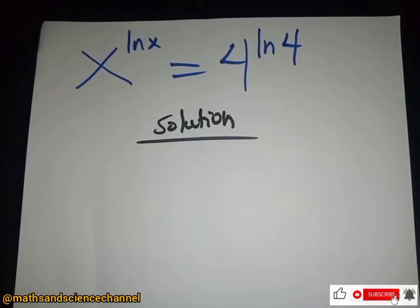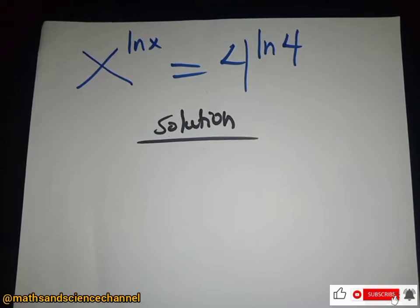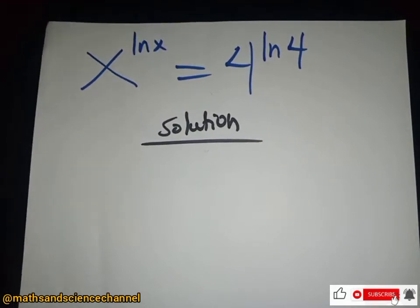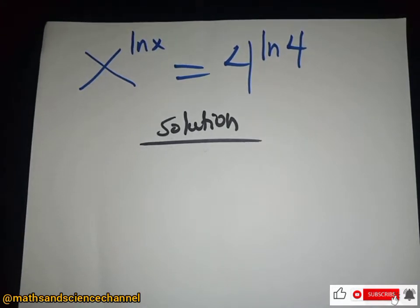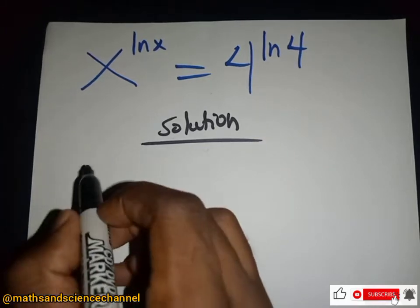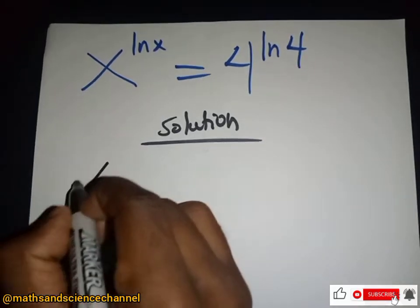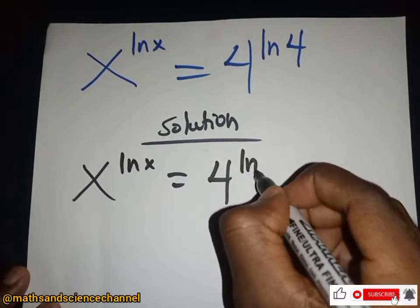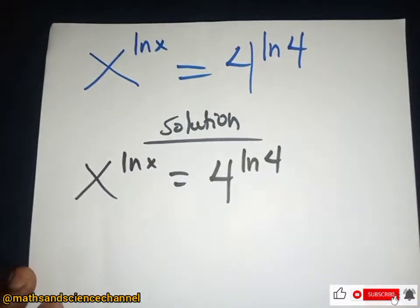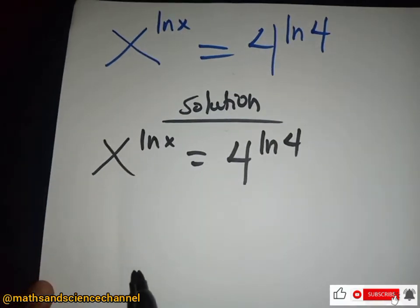Hello students, welcome once again to my channel. In this section we have an exponential equation: x to the power of ln x being equal to 4 to the power of ln 4. Let's solve for the value of x.